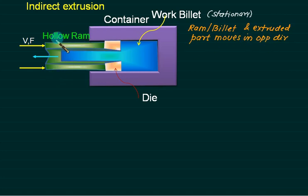The problem here is that since your ram is hollow, the strength of the ram is decreased. You cannot apply very large force to indirect extrusion. That is the main difficulty. The products prepared are collapsible tubes like toothpaste, ointment. All these are manufactured with indirect extrusion. Aluminum cans.